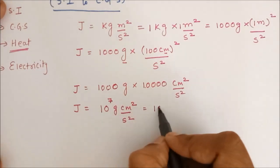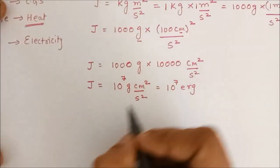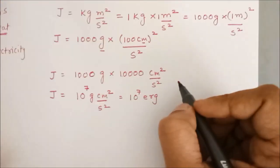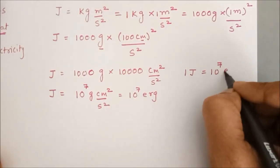So, we have come to a very important conclusion that 1 joule is equal to 10 to the power 7 erg.